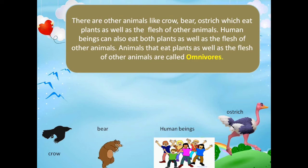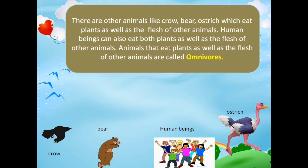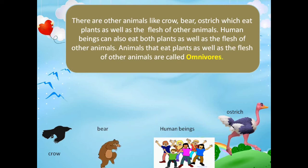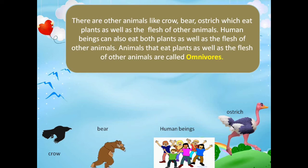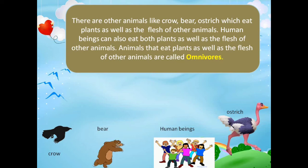There are other animals like crow, bear and ostrich which eat plants as well as the flesh of other animals. Human beings can also eat both plants as well as the flesh of other animals. Some only like to eat vegetables, some only like to eat non-veg like chicken and mutton. There are also vegetarians who eat vegetables but like to eat egg as well, because egg is full of protein.